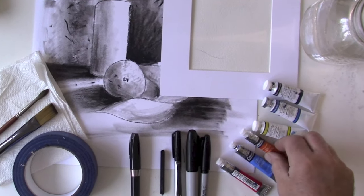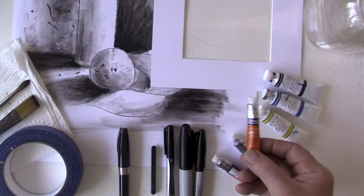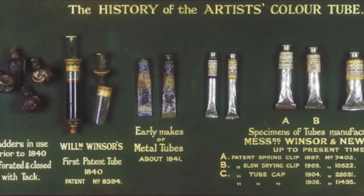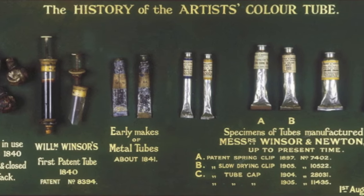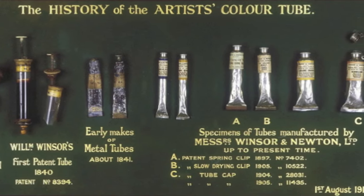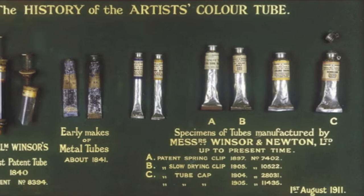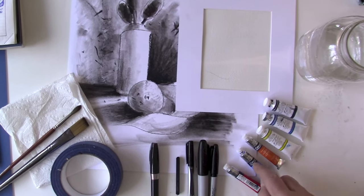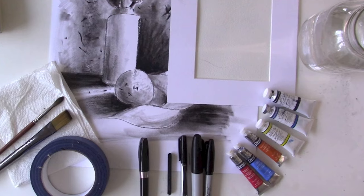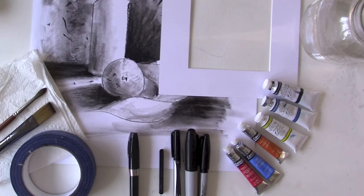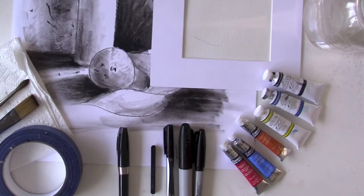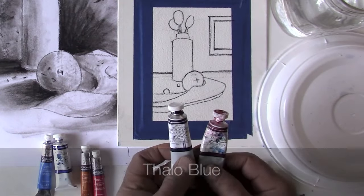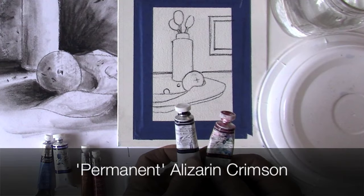Underneath that is the Cotman, which is from Windsor Newton. Windsor Newton, probably the inventor of tube paints, have been around for hundreds of years. They make a great student grade product that is fairly light fast. Light fast means it won't fade. We're using the phthalo blue, the alizarin crimson, the azo yellow.